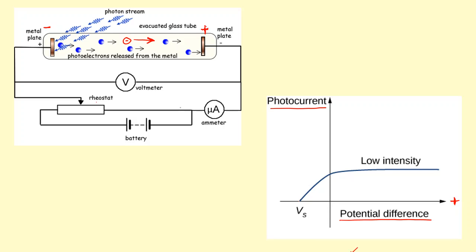You can see you get a constant current here. The reason for this is that no matter how high the voltage is, the size of the current is determined by the number of electrons that are flowing across, and that is determined by the intensity of the photon stream. So you get a constant current there.